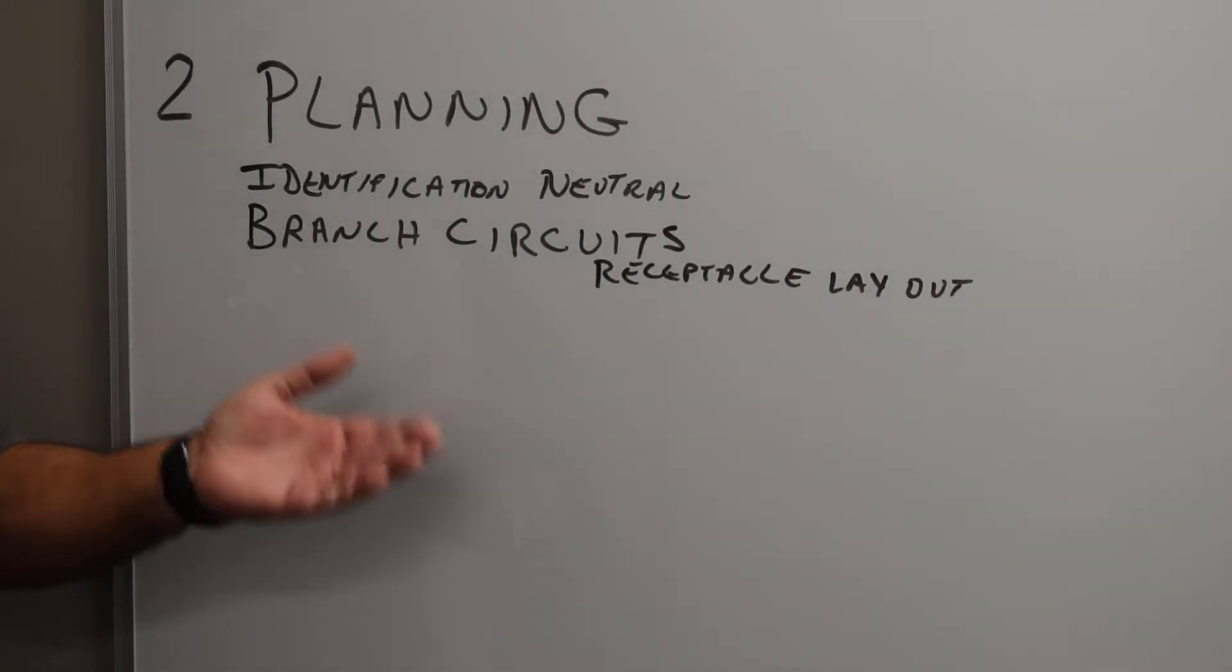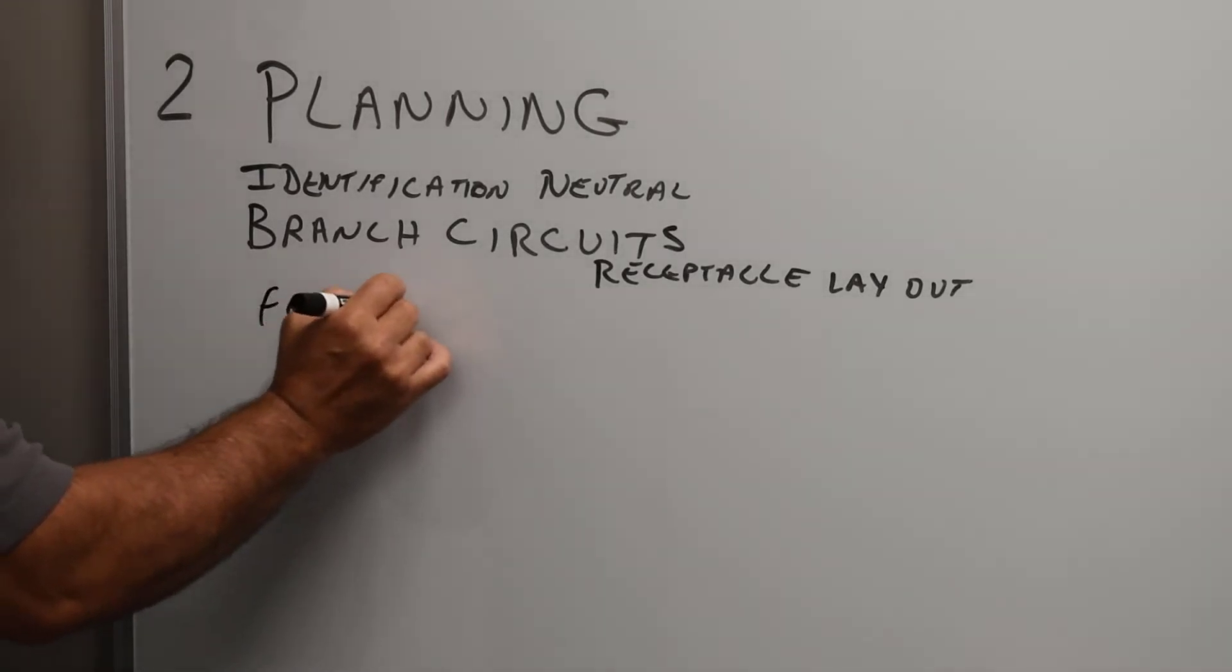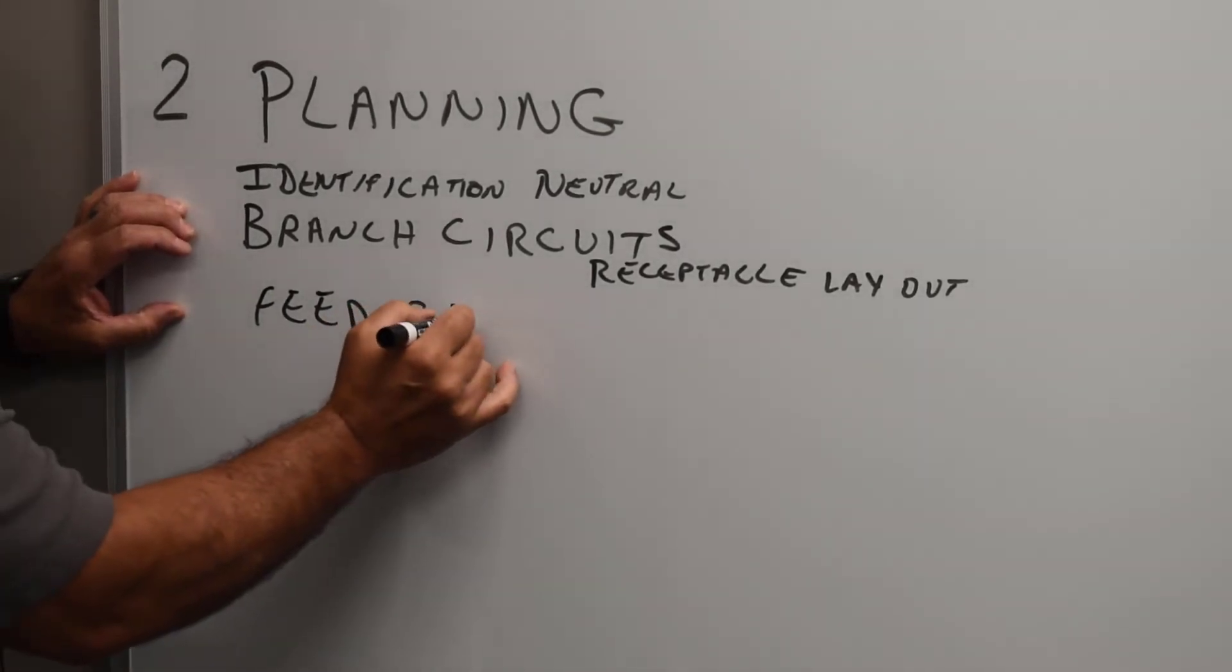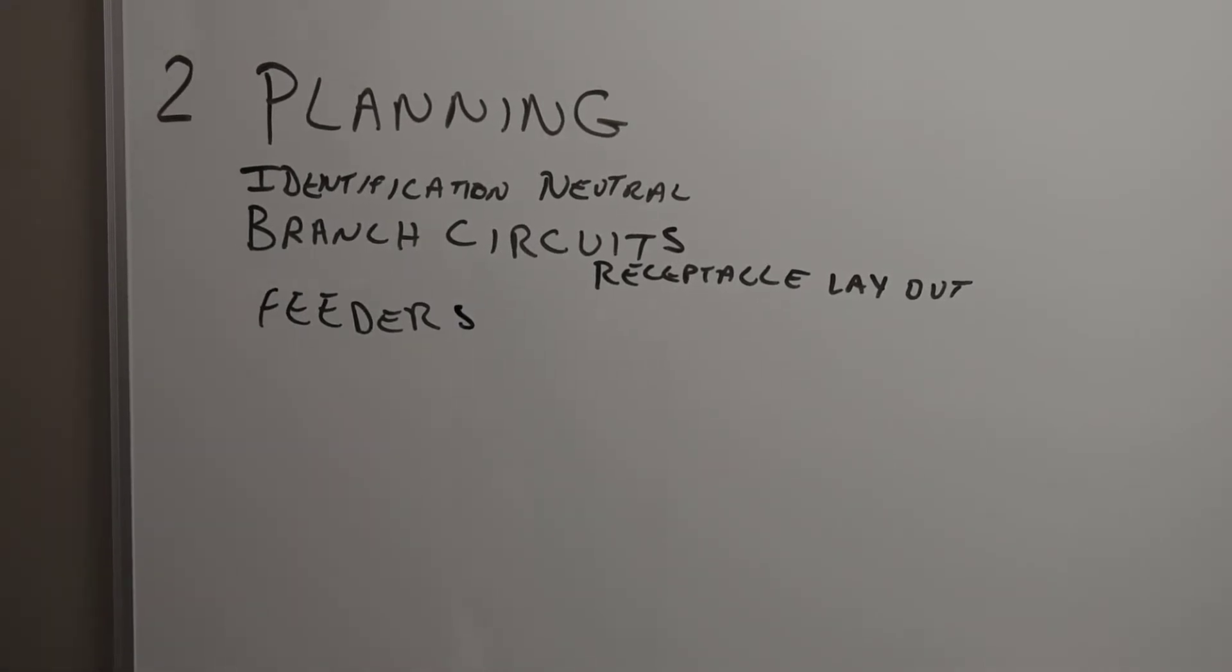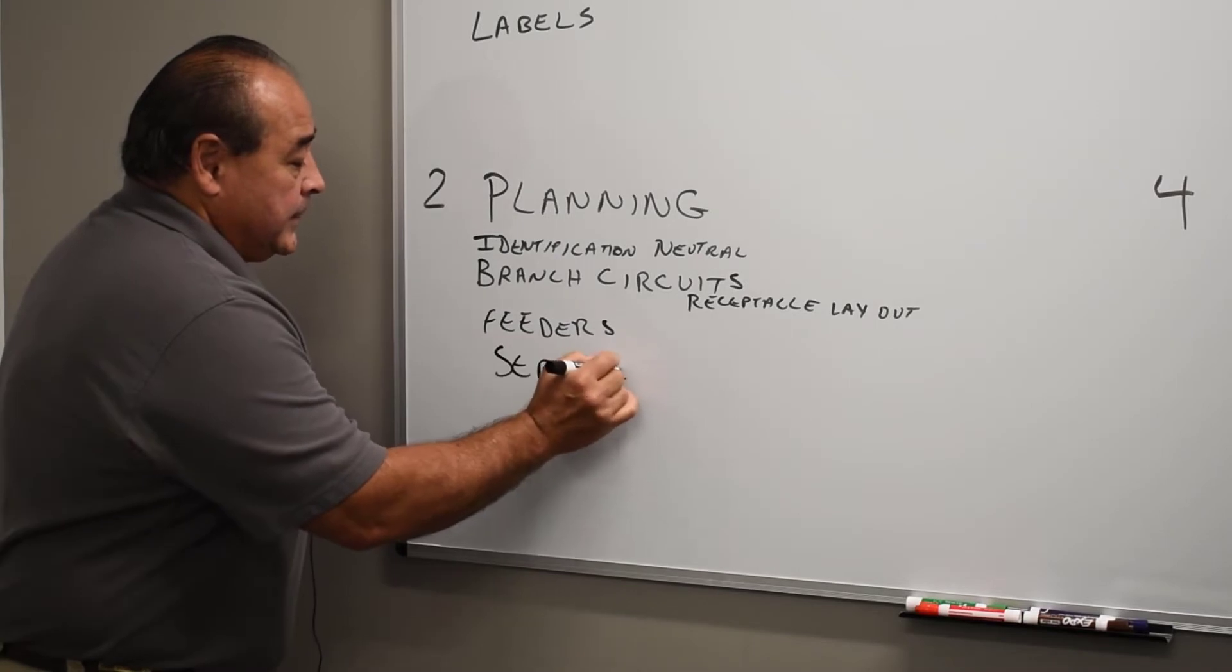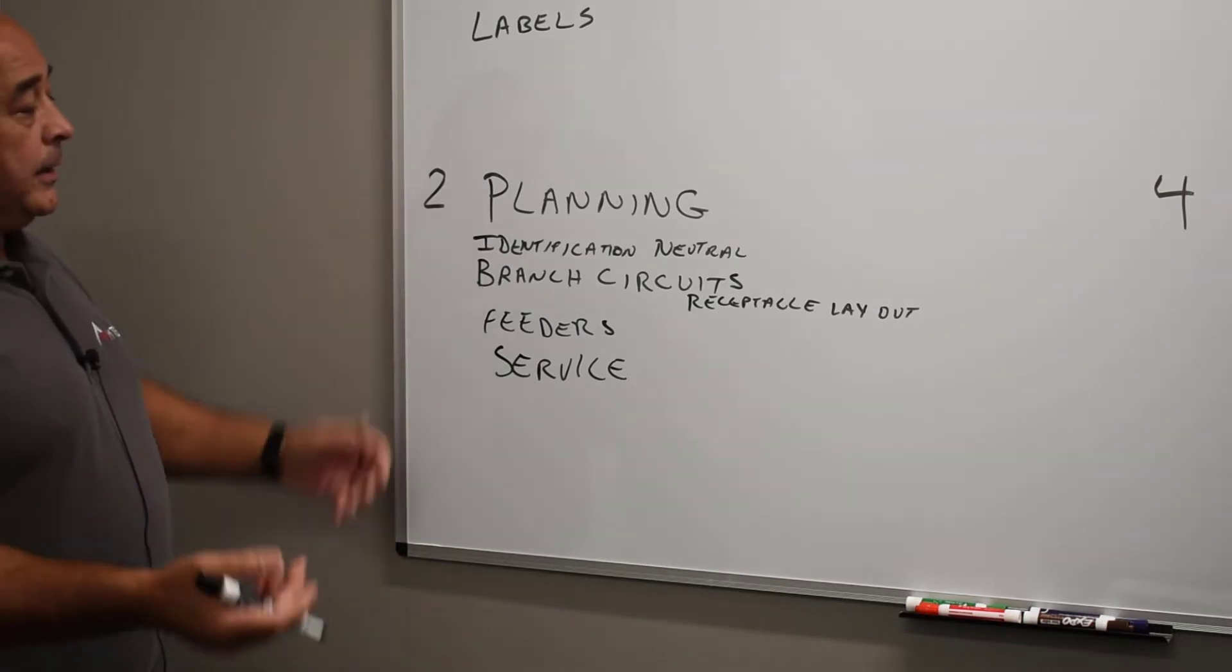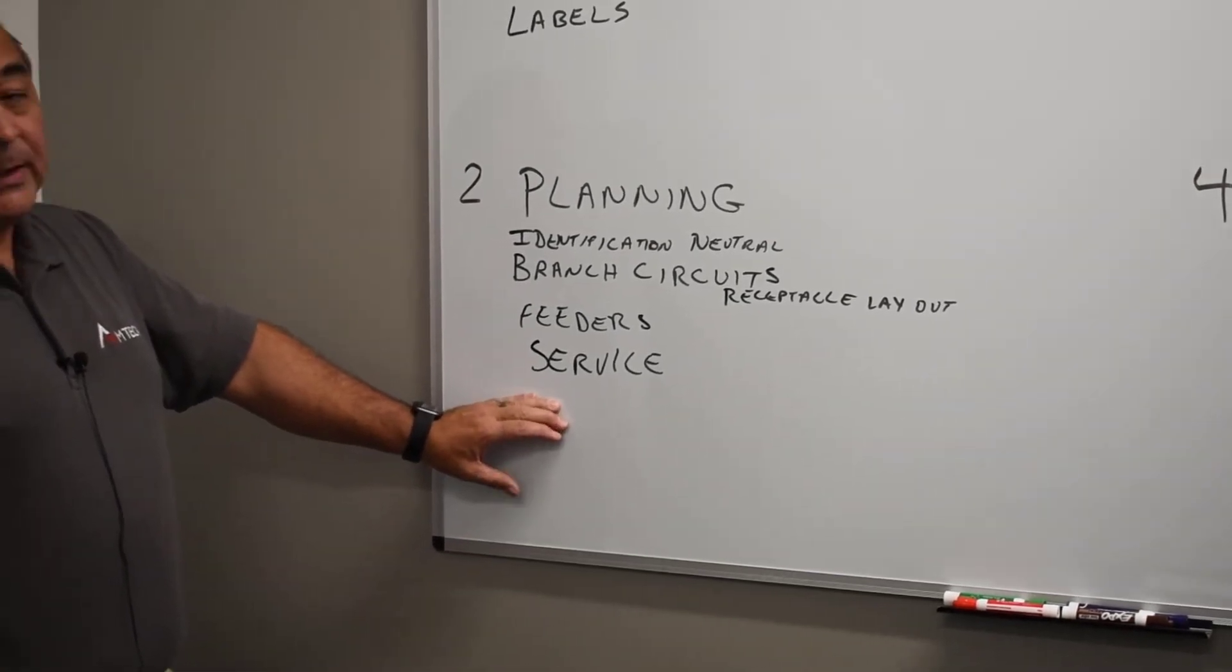Then we get into feeders. Well, feeders go to our distribution equipment and take care of the needs of the branch circuits. One leads into the other. And once we know how many feeders that are required for the branch circuits, we get into services. The services, that's how we size the total load to take care of feeders, and feeders take care of the branch circuits, on and on, so just a cycle. Once we understand what size service we need, then we have to build a grounding electrode system.